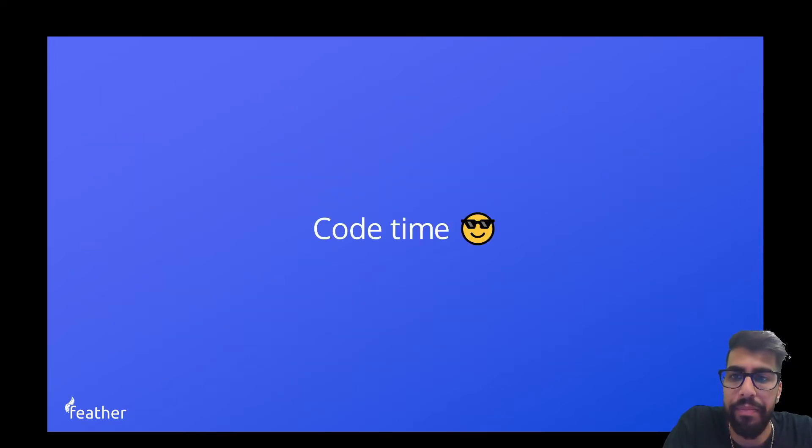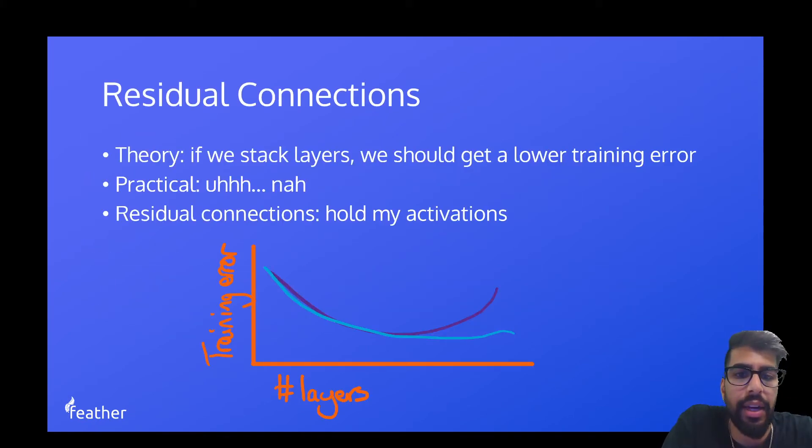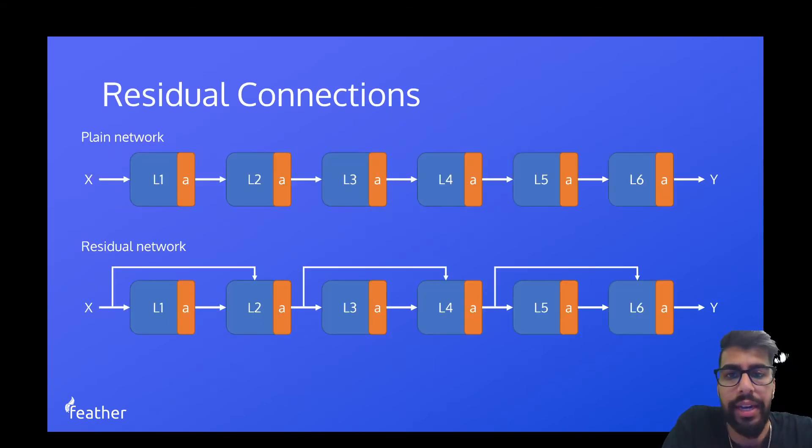Residual connections allow us to match this theory. And let me just check what... Now, the way they do this is... We can go to this next network. Imagine a plain network which has six layers, right? This A stands for activation. So we have some input x and we feed it into our first layer and then we activate the value, feed it into our next layer, we activate the value, so forth, right? All the way until we reach the end of the network and get y.